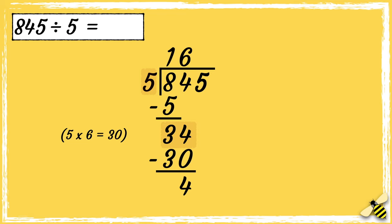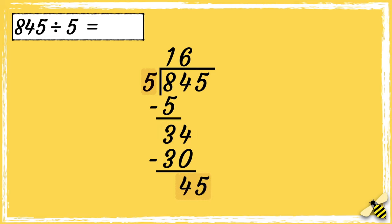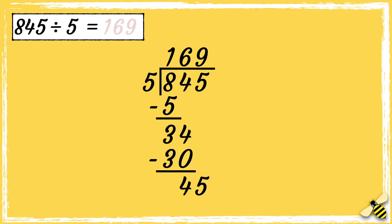We can now bring the third digit down. Finally, how many 5s go into 45? 5 goes into 45 nine times. So the answer is 169.